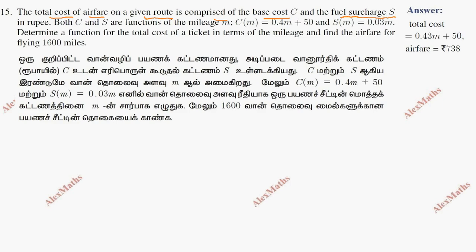So total cost is going to be T. Total cost is going to be base cost plus fuel surcharge S, so T = C plus S. And C is going to be 0.4M plus 50.